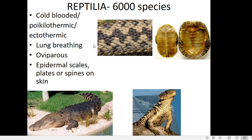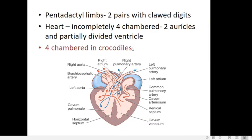Reptiles are oviparous — egg-laying forms. A major feature is that they possess scales over their body, and these scales are epidermal in origin. In fishes, scales originate from the dermis layer of the skin, but in reptiles they originate from the epidermal layer. Sometimes these scales may be in the form of plates or spines. Reptiles have two pairs of limbs that are pentadactyl — 'penta' means five, 'dactyl' means digit — so they are built on a five-digit plan, and these digits end in claws.